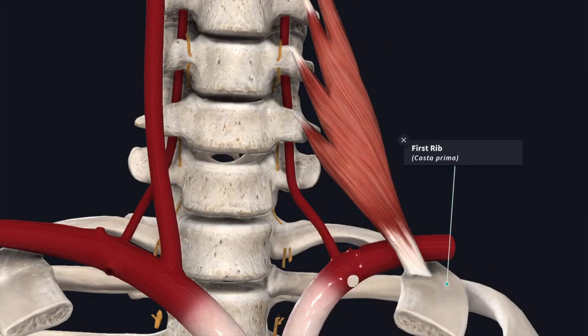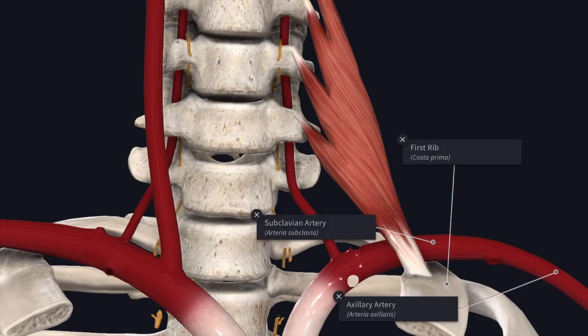The third part of the subclavian artery extends from the lateral border of the scalenus anterior muscle to the outer border of the first rib, and it rests on the groove on the upper surface of the first rib. This part appears in the posterior triangle of the neck. From the outer border of the first rib, the subclavian artery continues as the axillary artery.